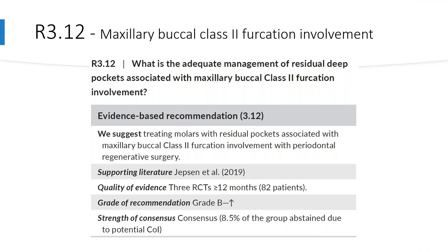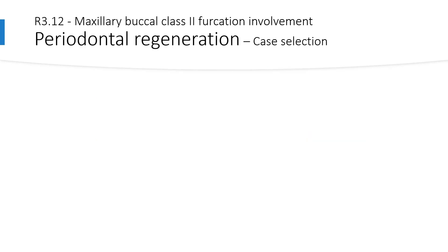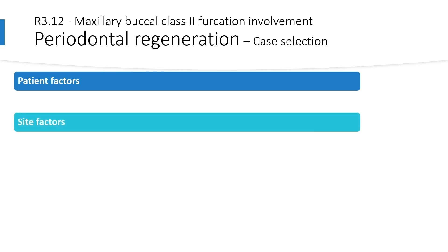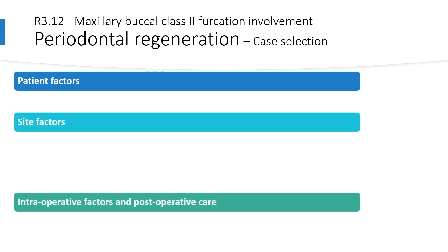With regards to the management of residual deep pockets associated with maxillary buccal class 2 furcation involvement, the authors recommend periodontal regenerative surgery using the Yepsen 2019 paper as supporting literature, which only included randomized controlled trials. However, only three studies were included, presenting with large heterogeneity and an unclear risk of bias. Therefore, the overall recommendation is graded as B. In order to obtain the best result, careful case selection is of paramount importance. We will discuss patient factors, site factors, intraoperative factors, and postoperative care.